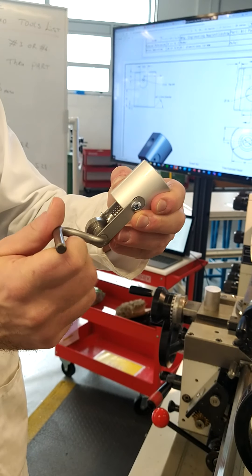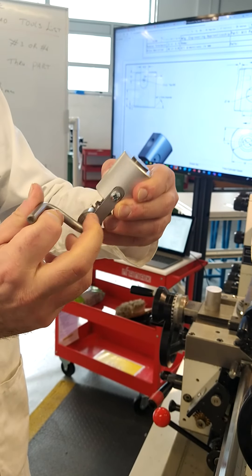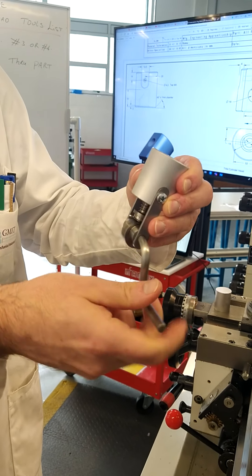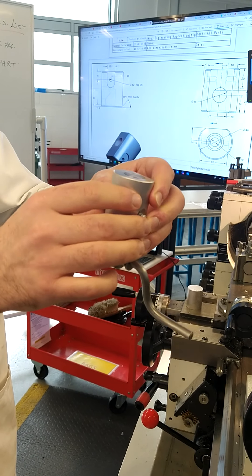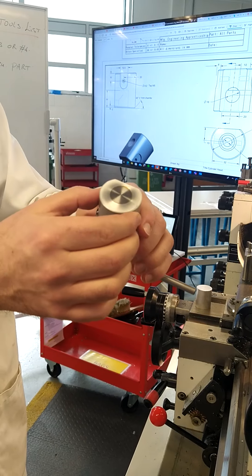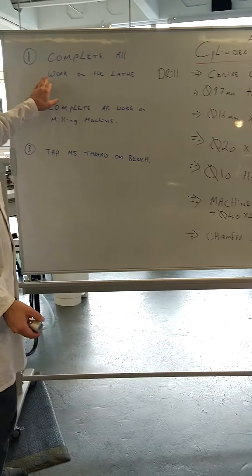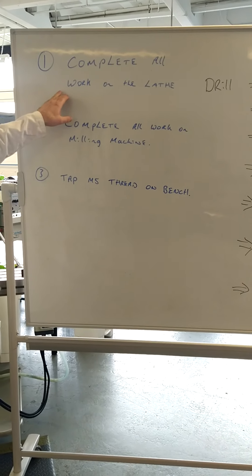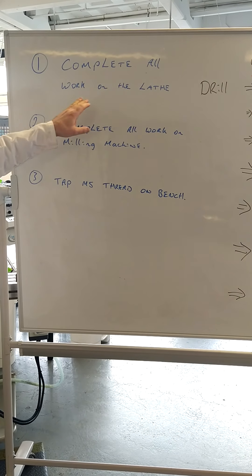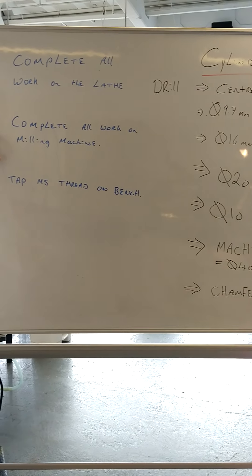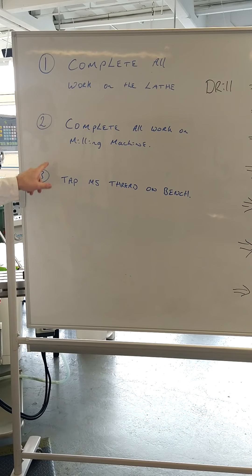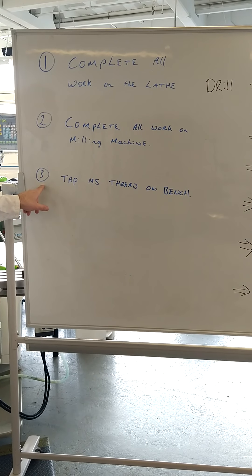So this is going to be completely machined manually. The first part we're going to look at completing today in this video is the cylinder head. We're going to complete all the work on the lathe first, all the holes are drilled. And then we move the part and do all the milling work. Finally finish up out on the bench, do all the tapping.